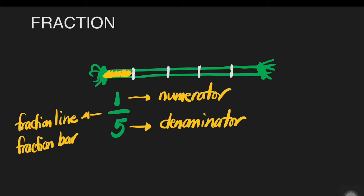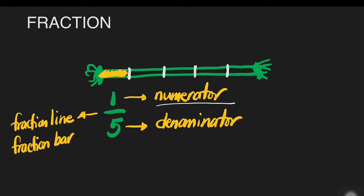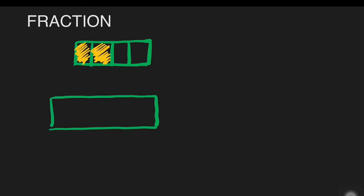The numerator tells the number of parts that are being used, eaten, or given, or being considered. Based on our example, we have one-fifth — one part of the rope was used. While our denominator shows how many equal parts this rope was divided into. For this example, we have divided the rope into five equal parts. Let's have some examples as I draw the following fractions.